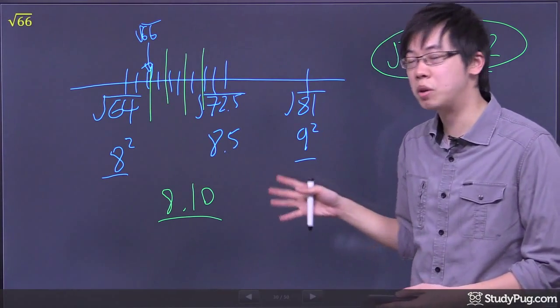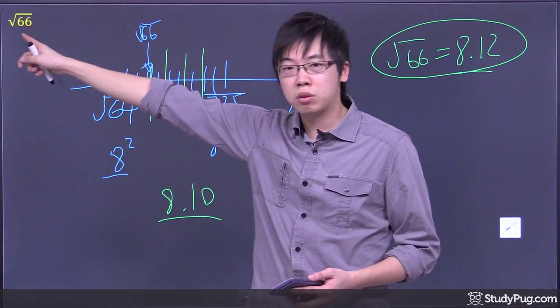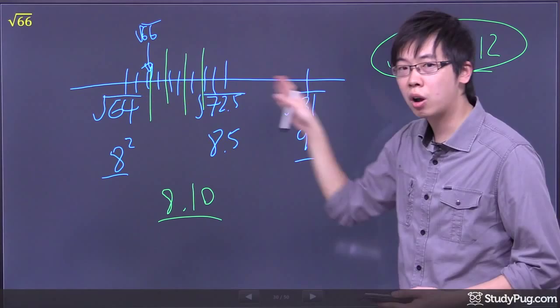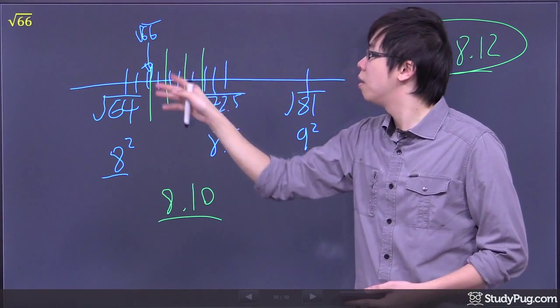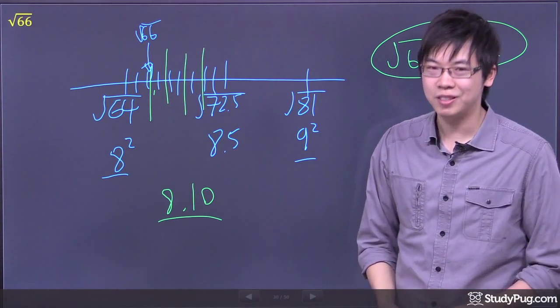But that's the work. And once again, find your perfect square numbers that will include that number 66 and then just draw, figure out how many units between them, and then just slowly figure out where your location is and just do the approximation. Thanks for watching.